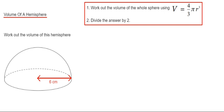So let's have a look at the example here. Our hemisphere has a radius of six centimeters. So if we substitute this into our formula for the volume of a sphere, it would be four thirds times pi times six cubed.